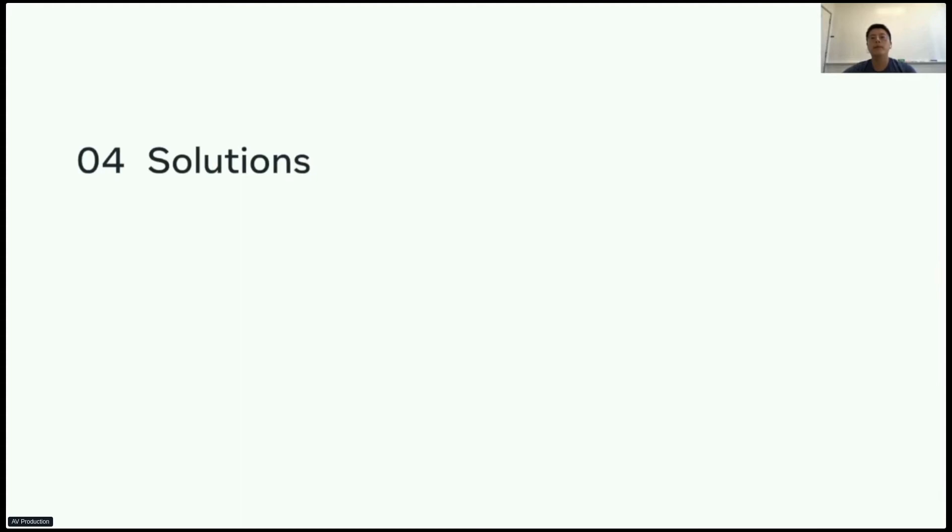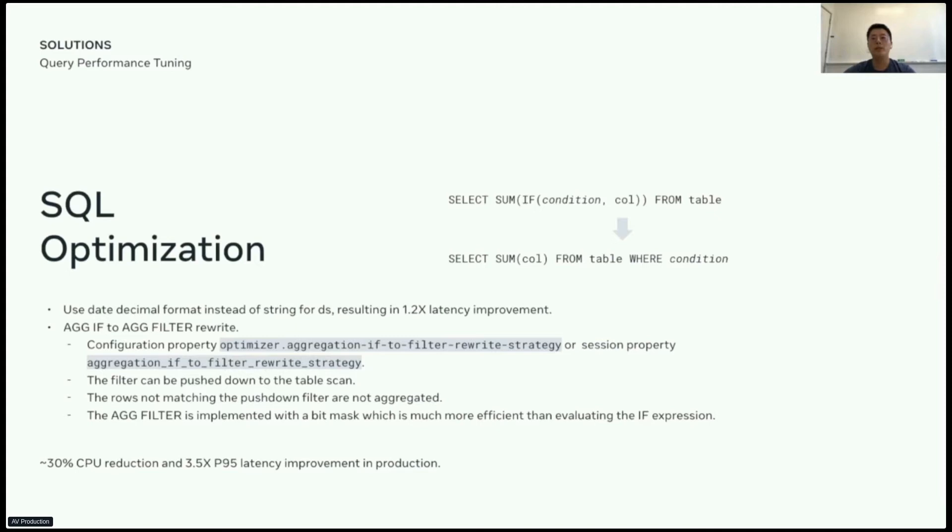So, how do we leverage those characteristics and address the challenges? First, we did a bunch of SQL optimizations. A couple examples here. Given that a lot of date comparisons are involved in the query, we tried different date formats and observed 1.2 times latency improvement by just switching the date format from string to decimal. Also, we implemented an optimizer which rewrites aggregation if to aggregation filter. This can be enabled by the configuration property or the session property. Basically, it pushes down the filter inside the aggregation functions into the where condition whenever it's possible.